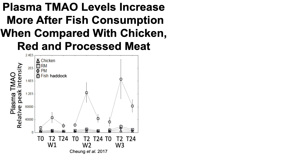This study looks at plasma levels of TMAO on the y-axis and time on the x-axis. They gave people four different meals — chicken, red meat (RM), processed meat (PM), or fish (haddock) — and looked at TMAO levels in blood at week 1, week 2, and week 3, and at three time points after eating: T0 (baseline), T2 (two hours after), and 24 hours after each meal. Chicken, red meat, and processed meat had the lowest TMAO levels and almost no spike in TMAO in blood after eating them.